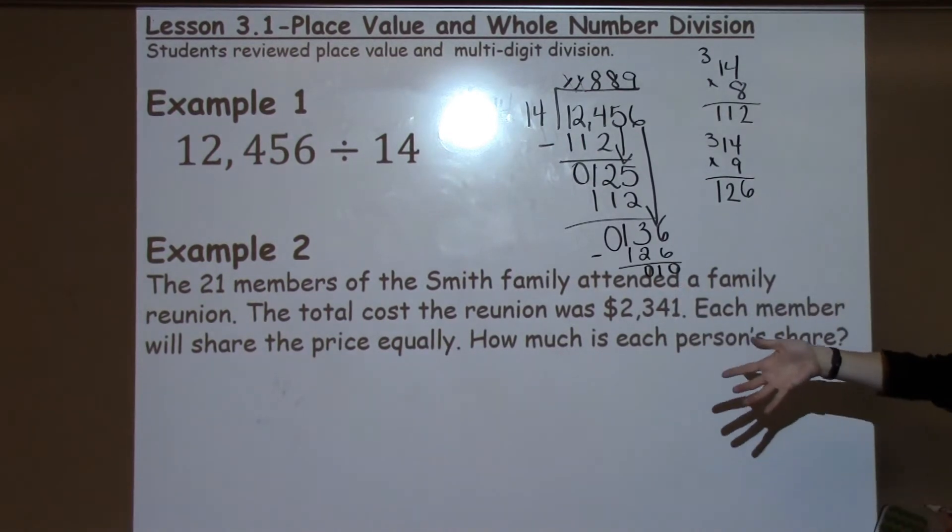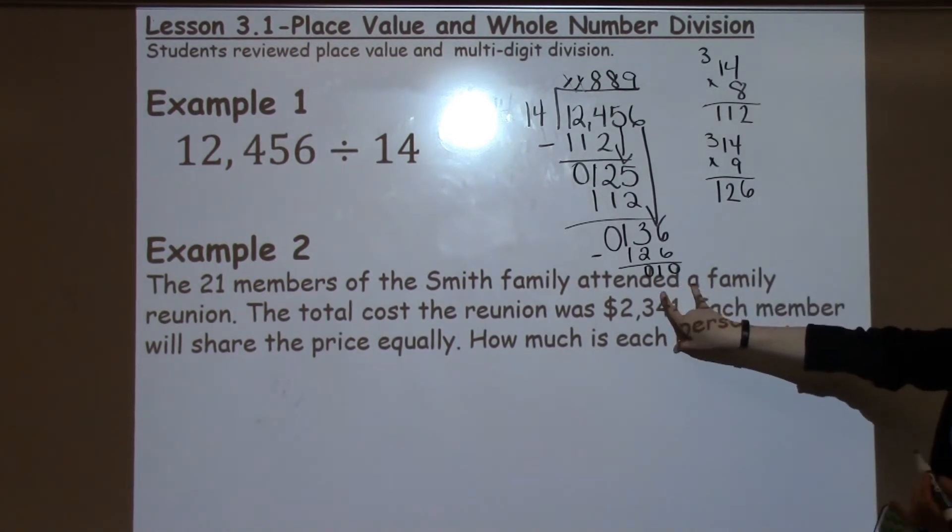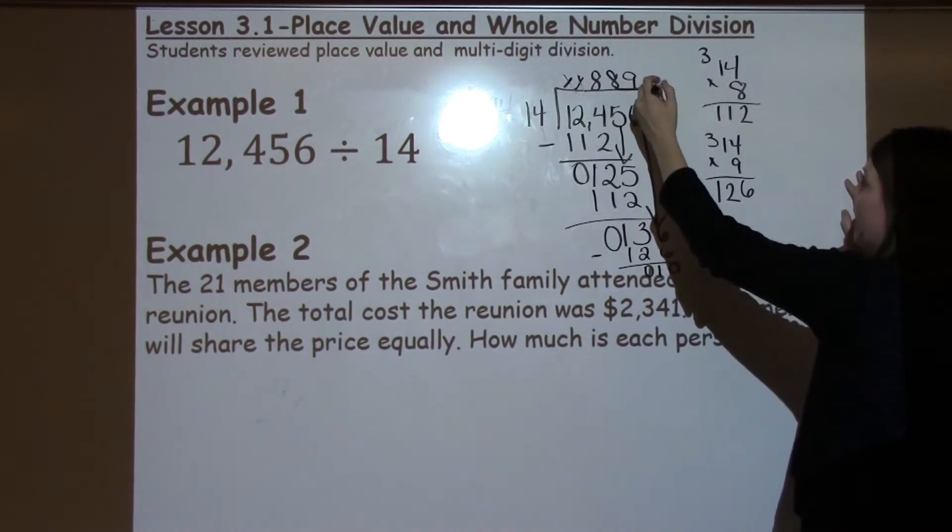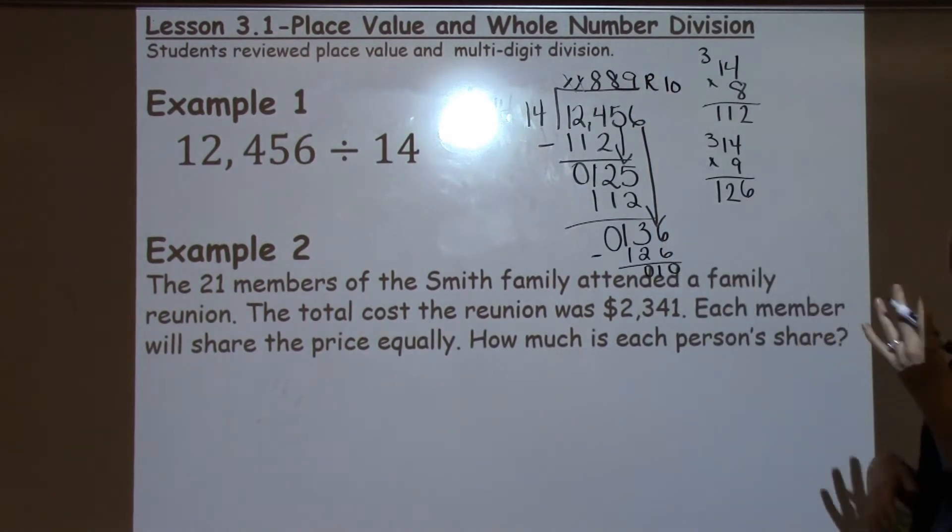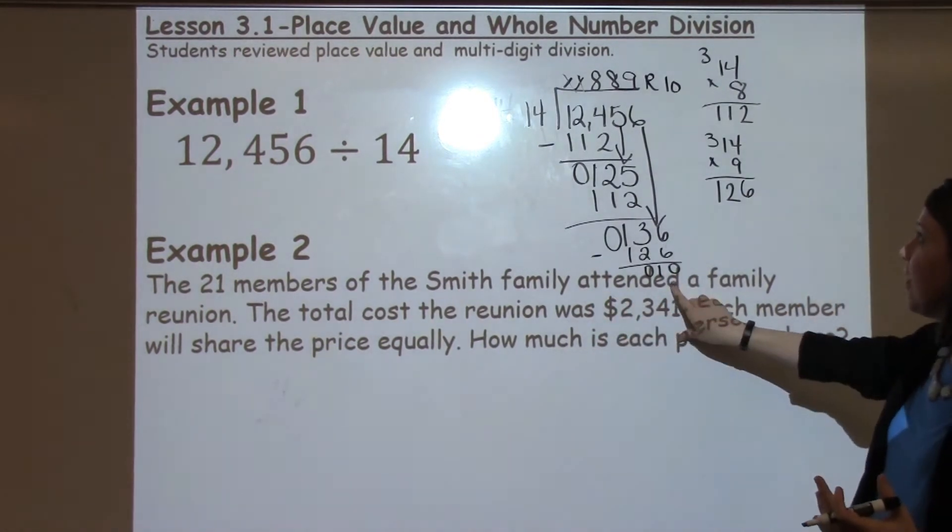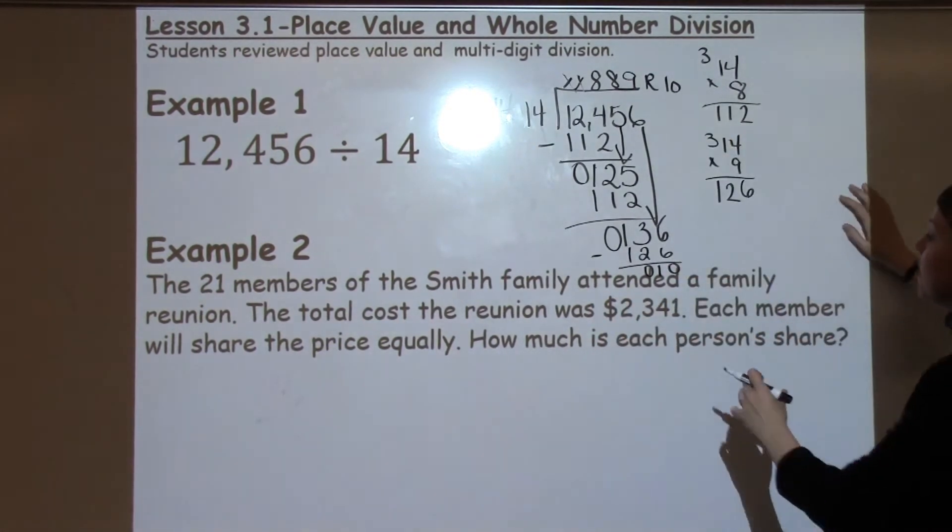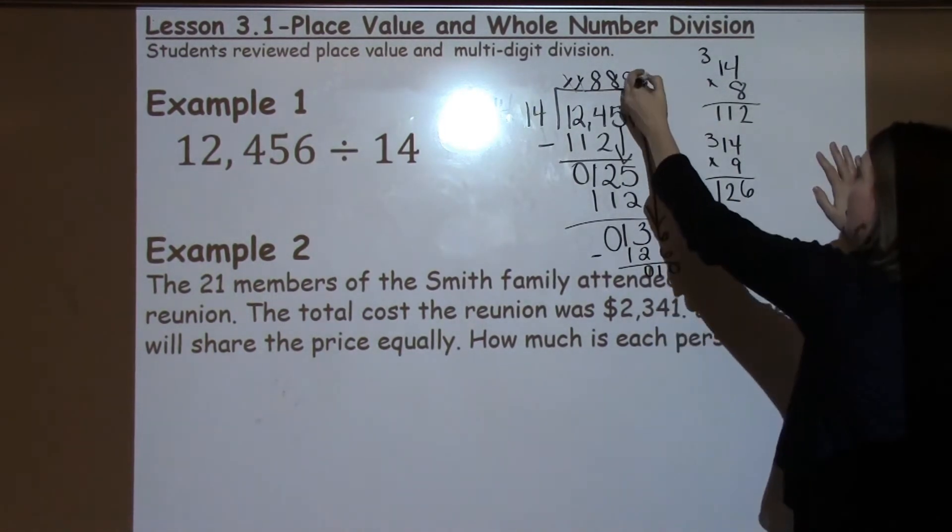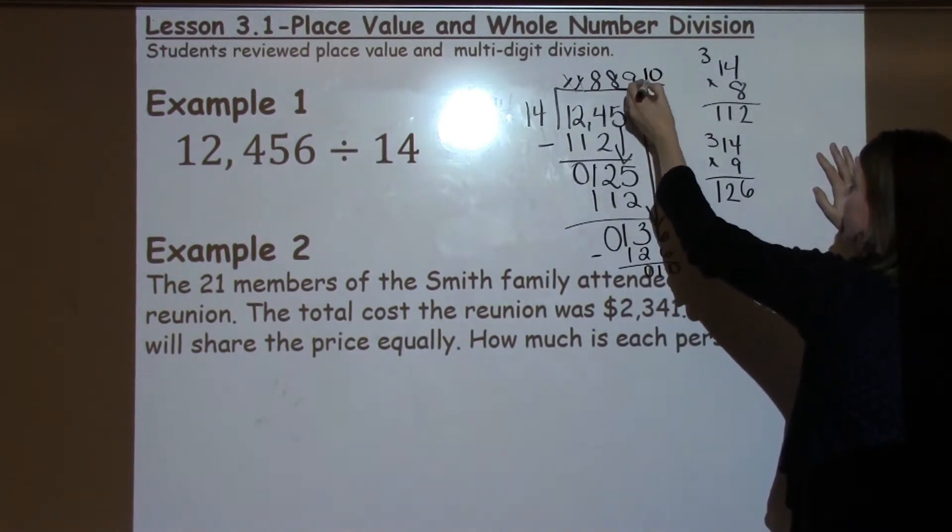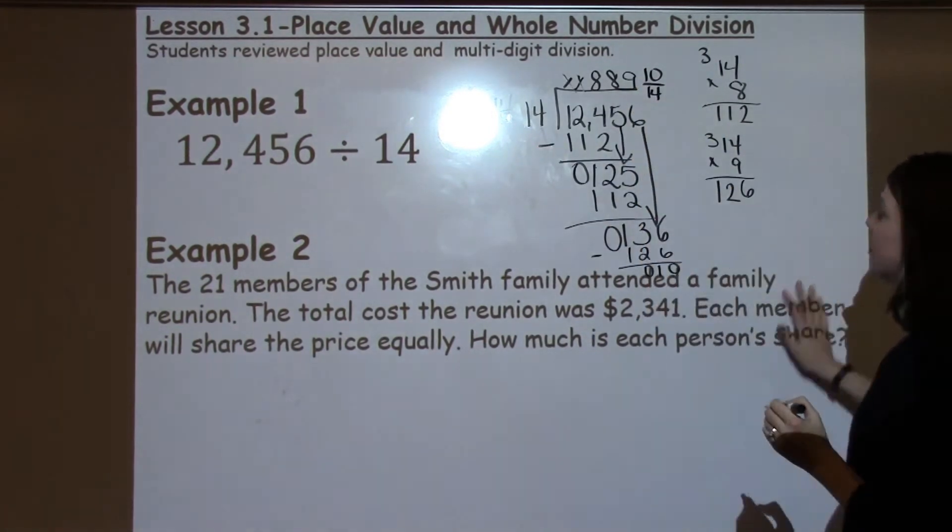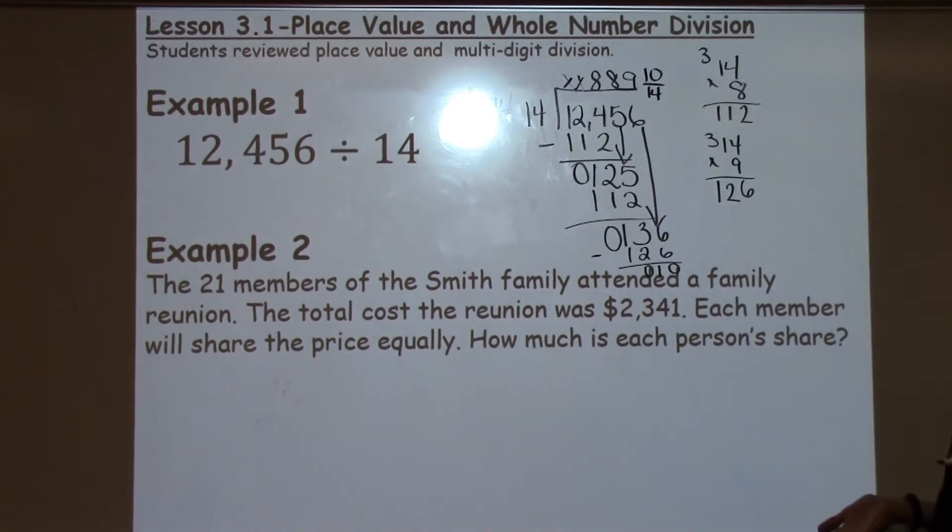In 6th grade, and in 5th grade, they're going to go ahead and write this as a couple of ways. One way the students are really familiar with is R10, which means remainder 10. But as we get a progression to going into upper 5th grade and then also into 6th grade, we like to see students write the remainder as a fraction. And the way they can do that is just taking their remainder, which is here, making it the numerator of their fraction, and then making their denominator their divisor. So our answer is 889 and 10/14ths.